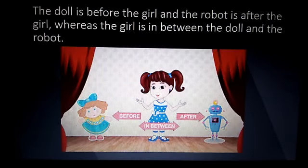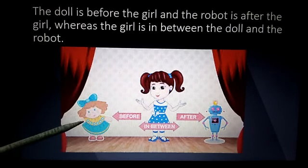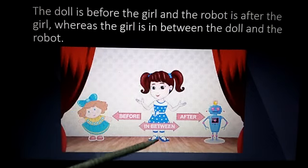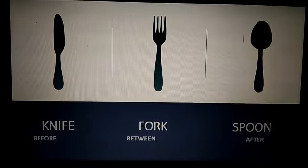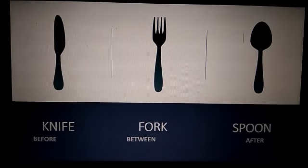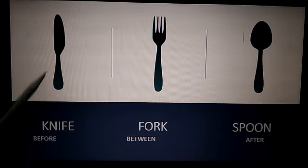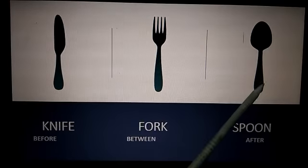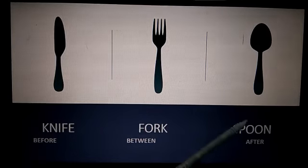Our next example: a doll is before the girl. The robot is after the girl, whereas the girl is in between the doll and the robot. Knife, fork and spoon — knife is before the fork, while spoon is after the fork, and fork is in between knife and spoon.